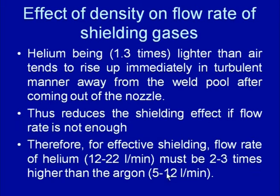When argon comes out of the nozzle it immediately tends to form a complete blanket around the weld pool, protecting it from atmospheric contamination. That is why argon requires lower flow rates than helium. The approximate flow rate range for helium is about 12 to 22 liters per minute, while for argon it is about 5 to 12 liters per minute.